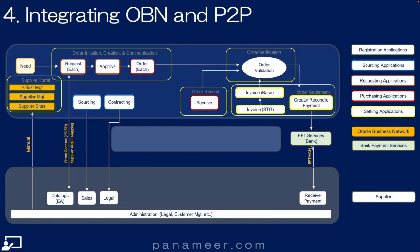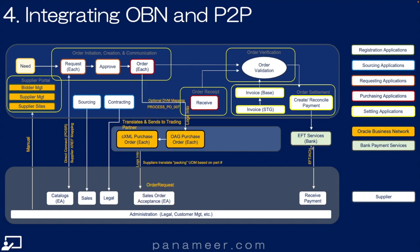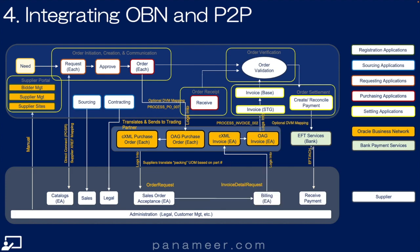Slide four: integrating OBN with the procure-to-pay or P2P process. You can see here the same buyer and supplier processes, and you can see the order going out into OBN, being transformed, and sent to the supplier. Then back through supplier billing, out to OBN, transform, back into staging, creating an invoice, and validating it. Click the link above to watch a quick video explaining total buyer-supplier integration using Oracle — meaning beyond OBN.